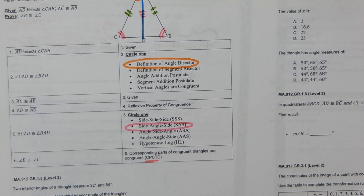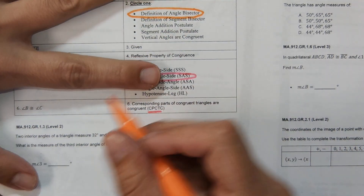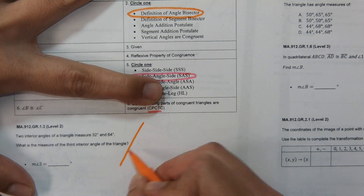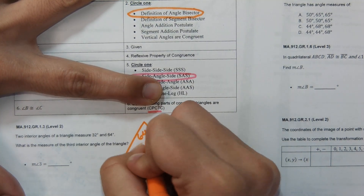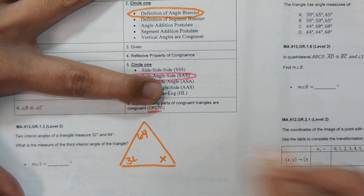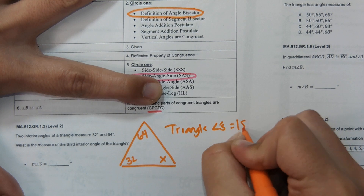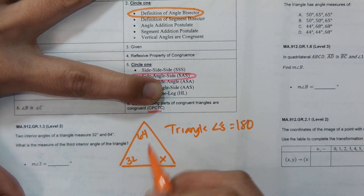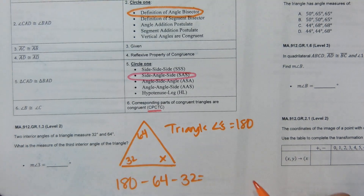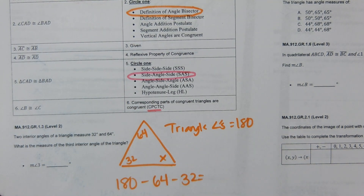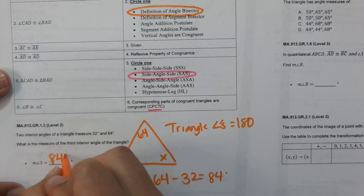The next one is pretty easy. Two interior angles of a triangle measure 32 and 64 degrees — find the measure of the third angle. Triangle angles add up to 180 degrees, so we do 180 minus 64 minus 32, which equals 84 degrees. The measure of angle 3 is 84 degrees.